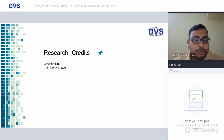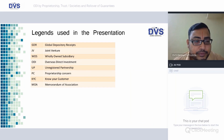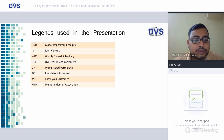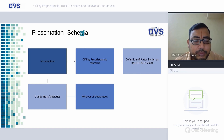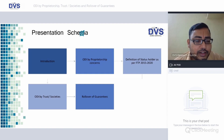Sincere thanks to both Grace Lynn and Akash for getting this presentation ready. The legends are fairly simple, nothing much complicated — all of this has been covered earlier. The only new one is the unregistered partnership, which we have termed as 'UP' here. Today we will cover ODI by proprietorship concerns, the definition of status holder which is critical, ODI by trust and societies, and the rollover of guarantees.